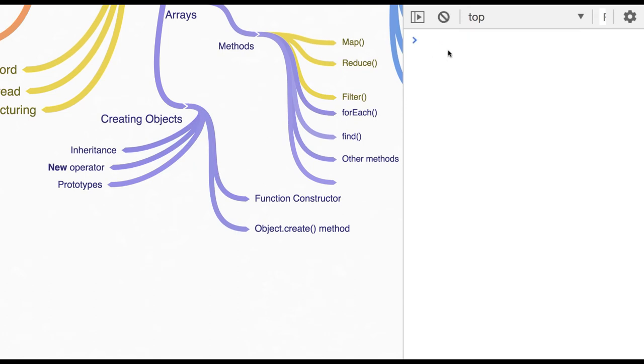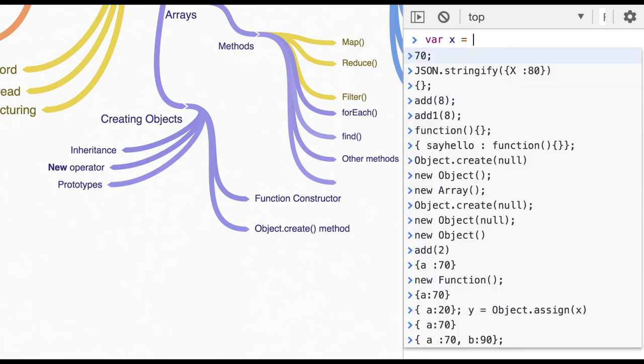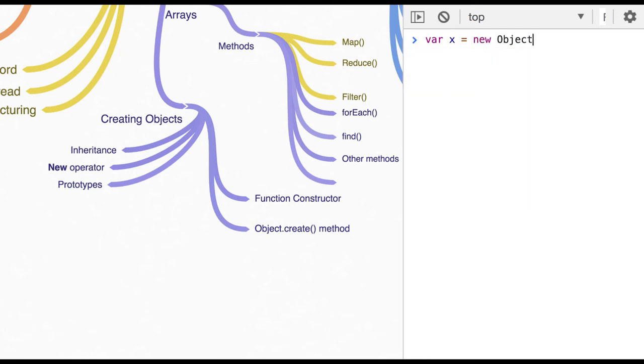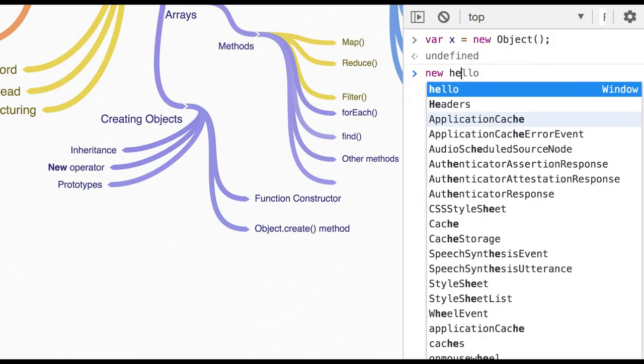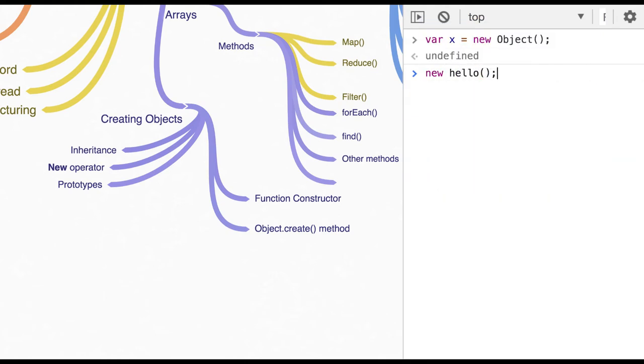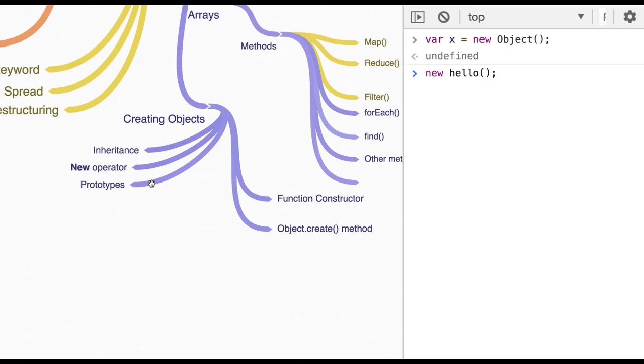Now creating the object. So you can create either a brand new object using new Object, or you can create using Object.create. So either you inherit some properties from other object or you create a brand new object. And all these things, function constructor, whenever we are creating the object something like this. This is a function constructor. Object.create method, right?